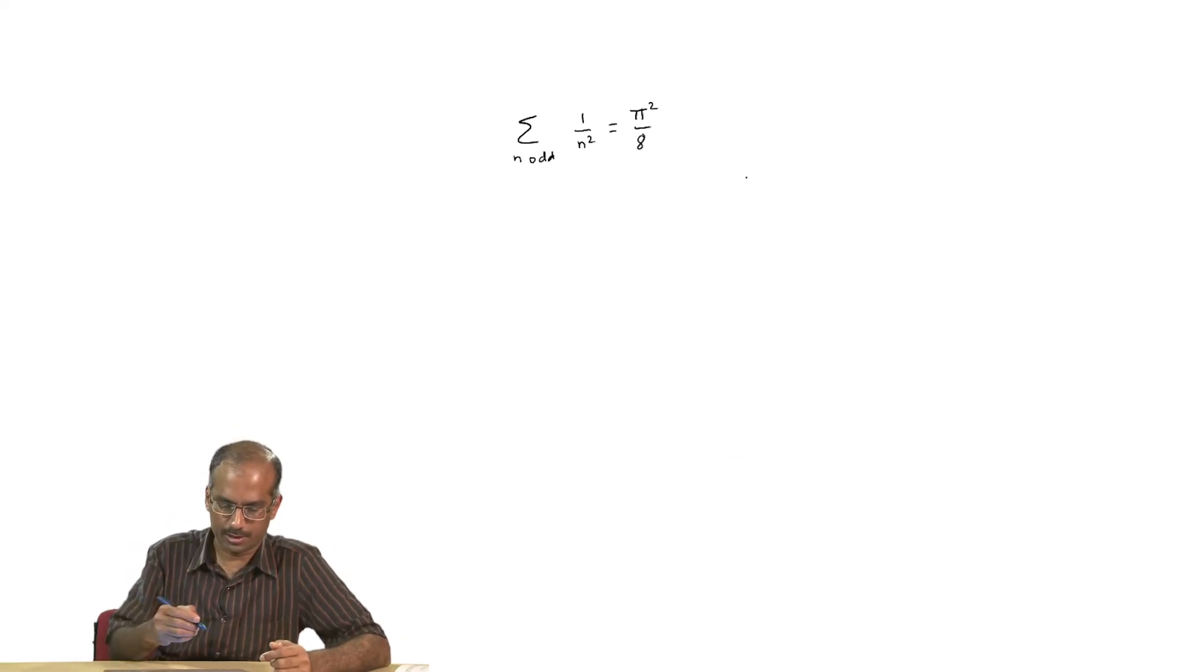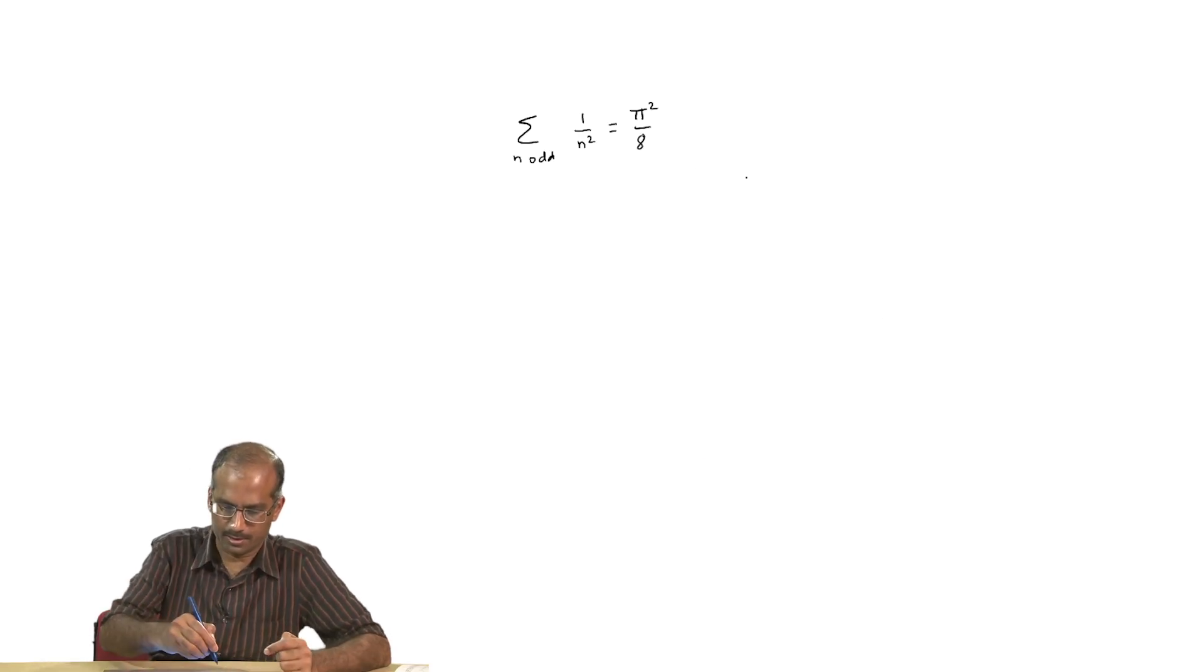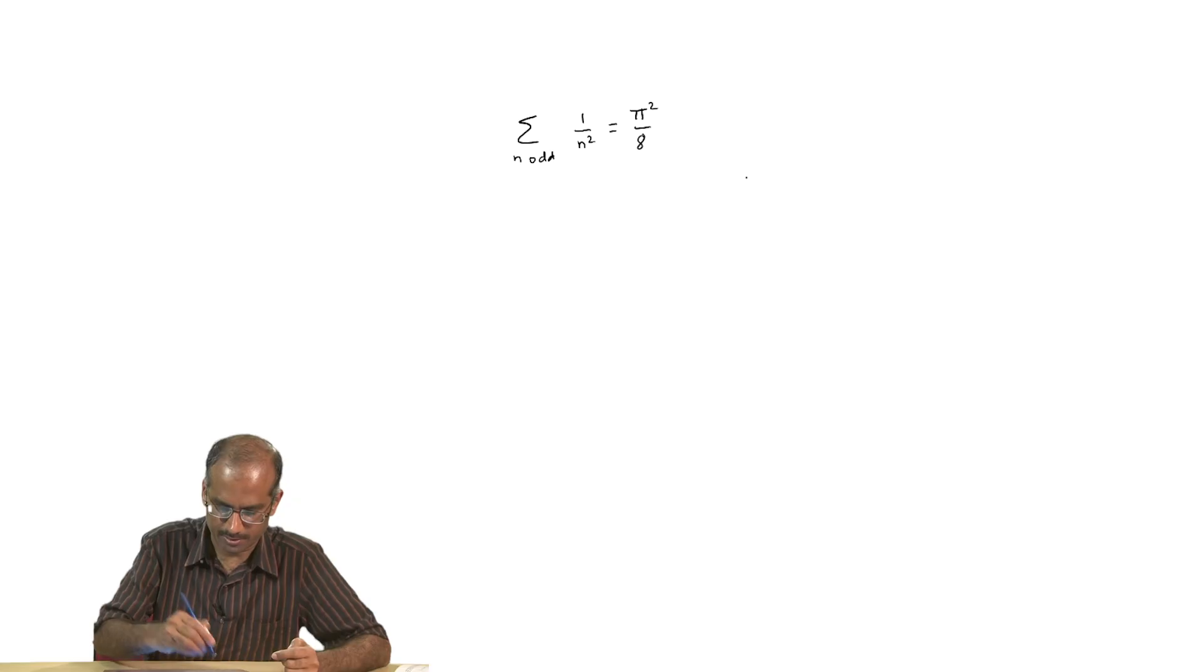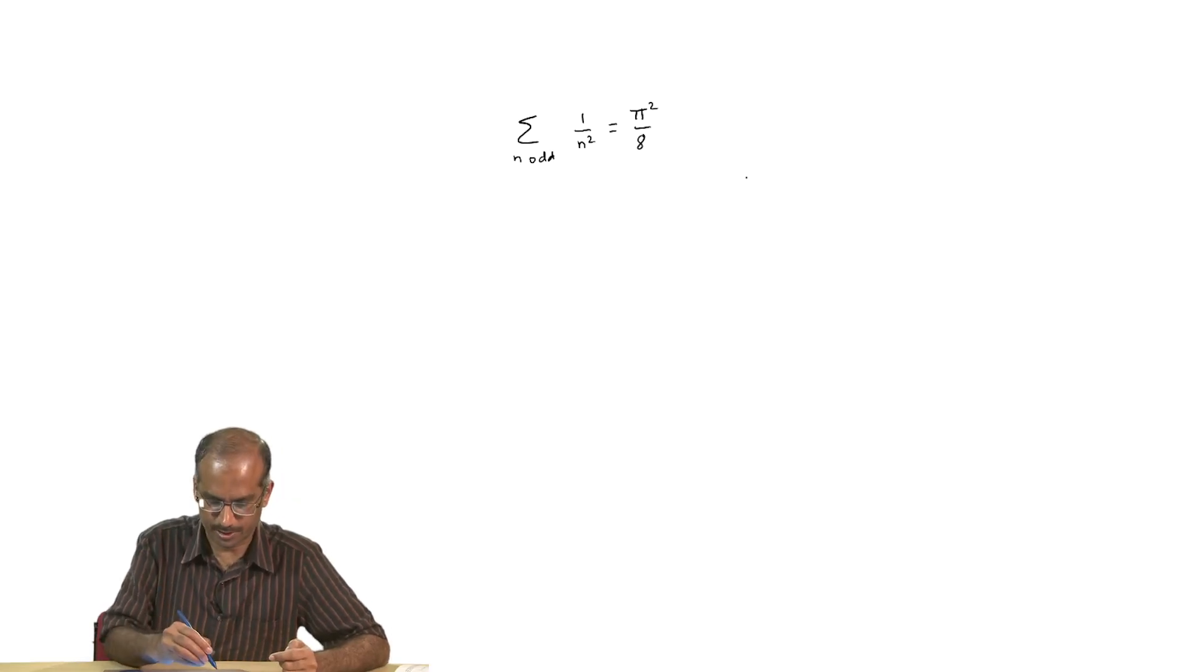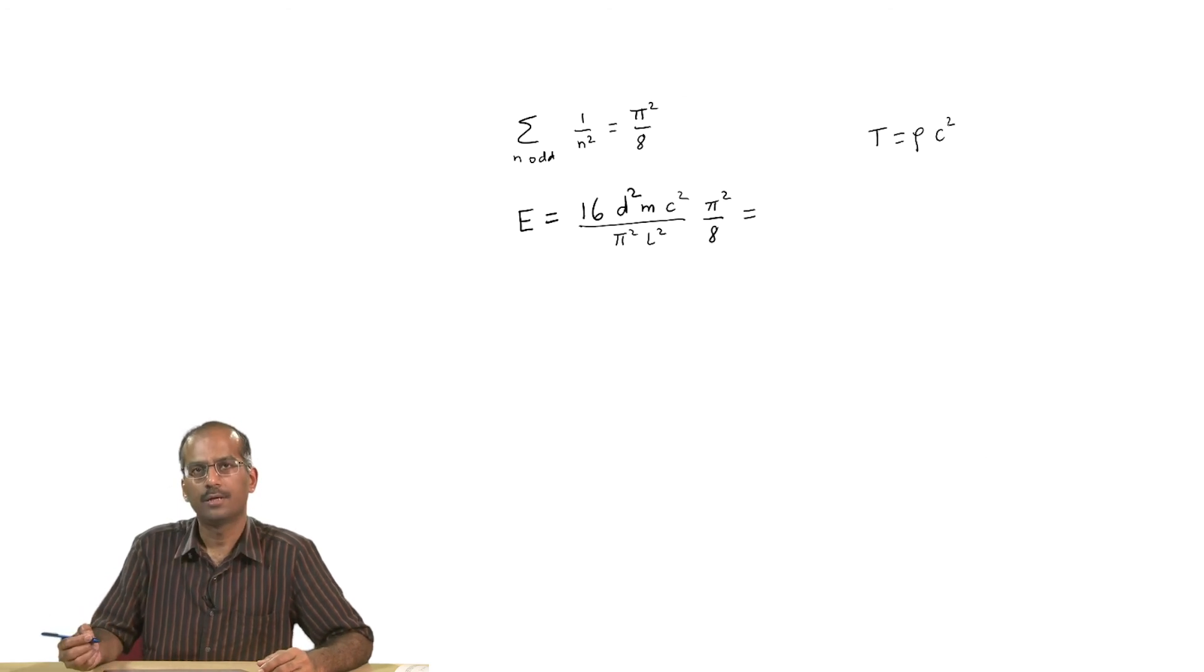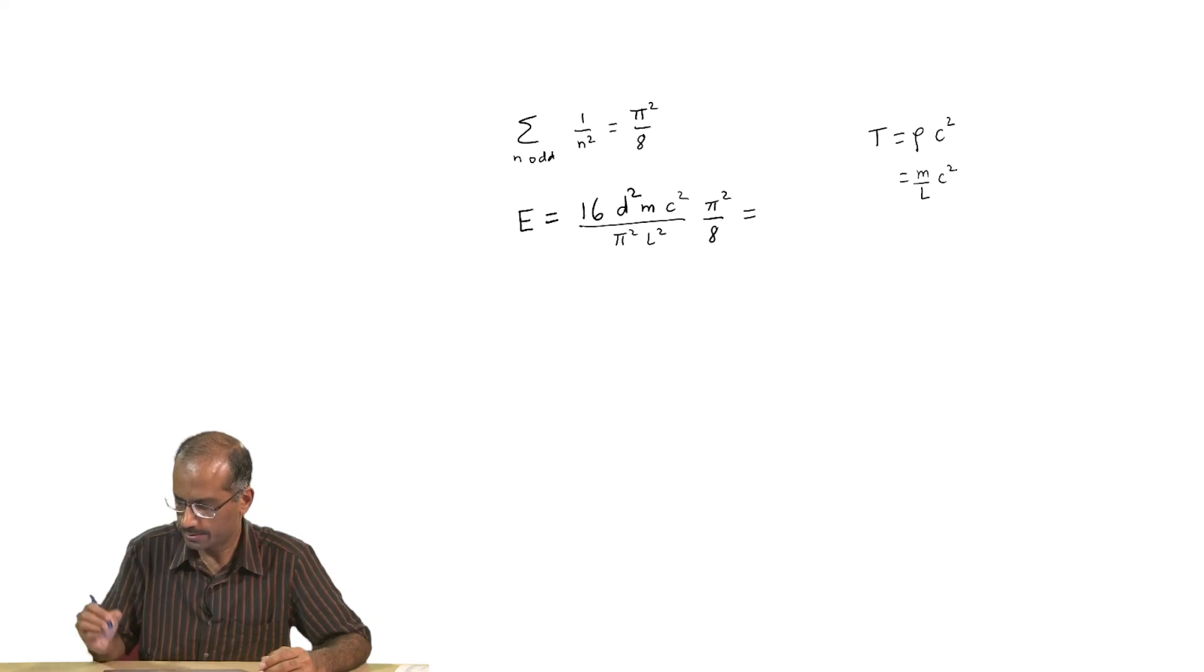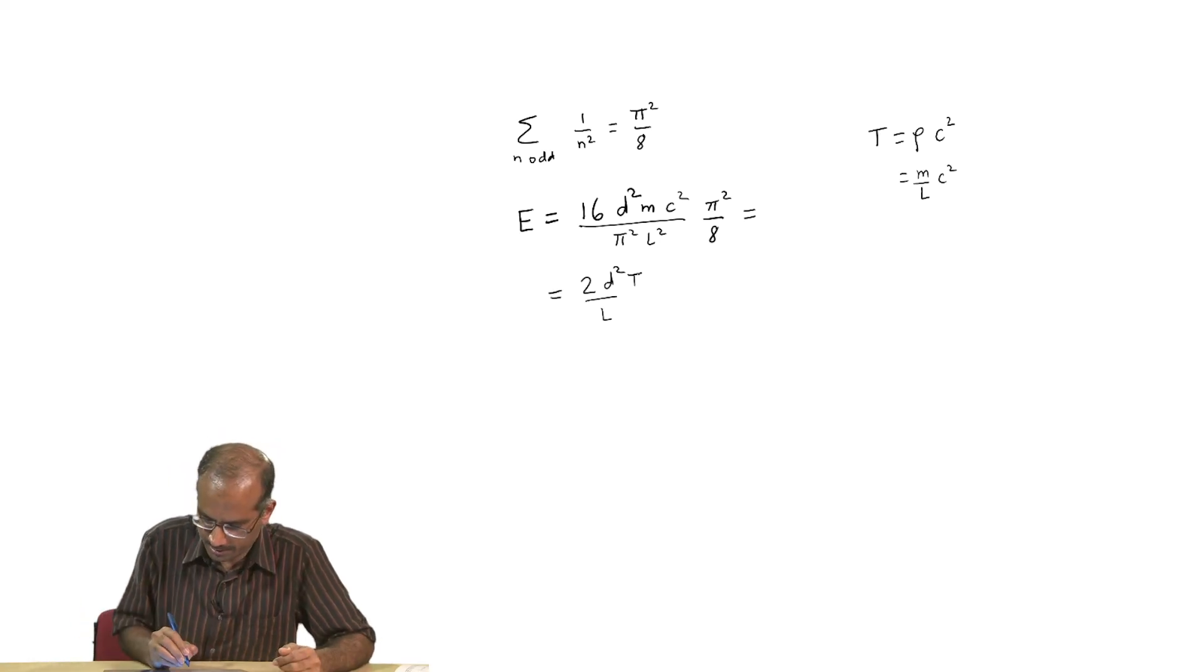Now we can substitute this in our expression for energy that we have just obtained, and if we do that I get my final expression. The tension in the string is equal to rho times c squared, and rho is the linear density which is m/L c squared. This gives me the final expression for the energy.